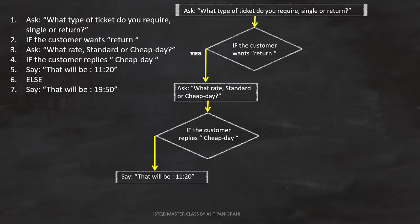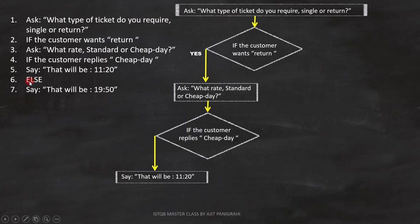Now let's see line numbers six and seven — they are very important. Line six is else. This else is for the condition on line number four. Whenever you see the else statement, it is for the immediate if statement. We have two if statements before this else — one at line number two, and another at line number four. Else is always for the immediate if condition. Therefore, the else on line six is for the if condition on line four, not line two. That means, if the condition fails, line number seven — say that will be 19.50 — will execute.